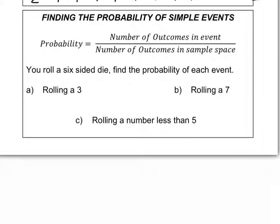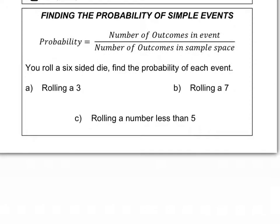Now let's find simple probabilities. Probability equals the number of outcomes in an event over the number of outcomes in the sample space — the total number of outcomes. So if you roll a six-sided die, there are six total numbers, so the total number of outcomes is six. For rolling a three, there's only one three on a standard die, so the probability is one out of six.